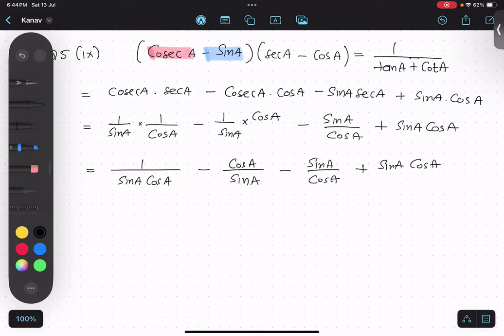So I don't think anything is getting cancelled. Let me take LCM. What LCM will happen? Sin A, sin A cos A, sin A cos A.